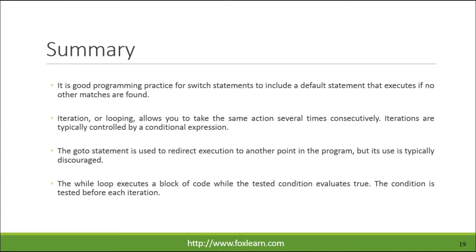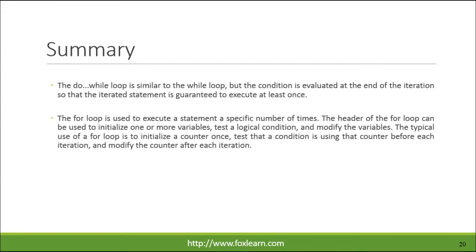The while loop executes a block of code while the tested condition evaluates true; the condition is tested before each iteration. The do-while loop is similar to the while loop, but the condition is evaluated at the end of the iteration, so that the iterated statement is guaranteed to execute at least once. The for loop is used to execute a statement a specific number of times. The header of the for loop can initialize one or more variables, test a logical condition, and modify the variables — typically initializing a counter once, testing it before each iteration, and modifying it after each iteration.